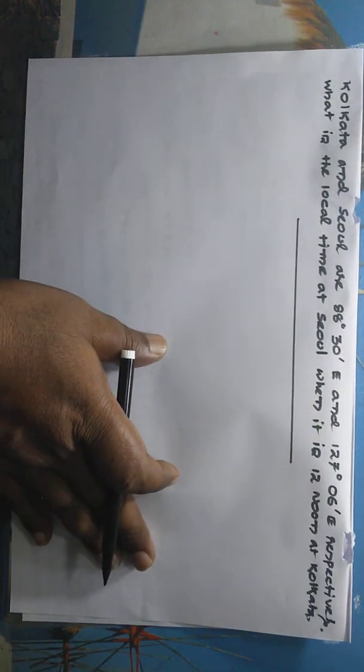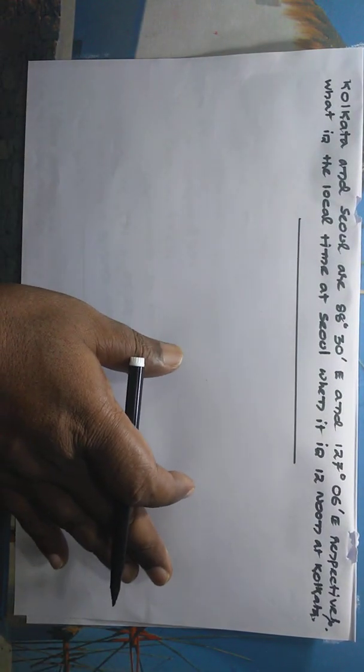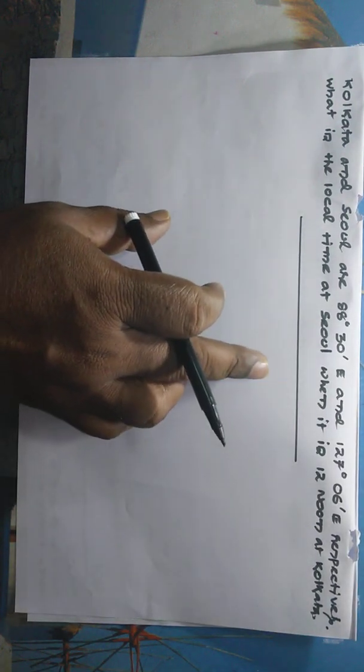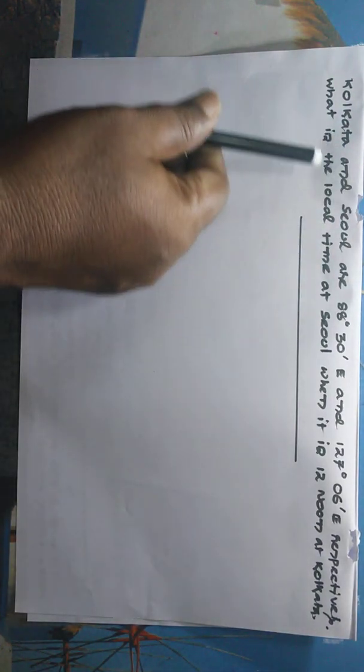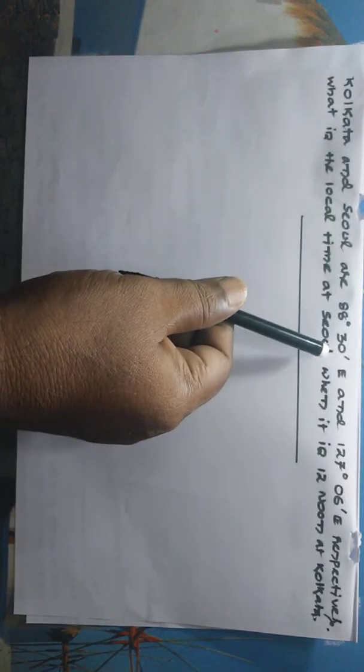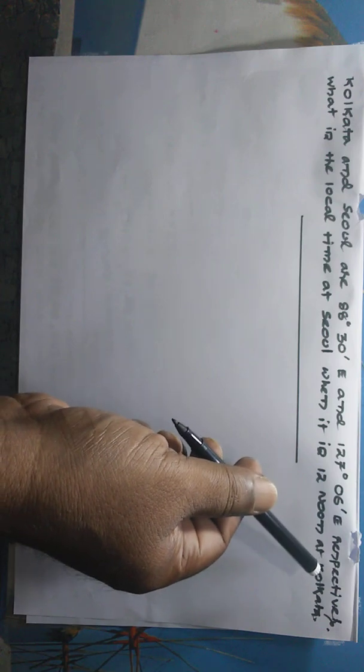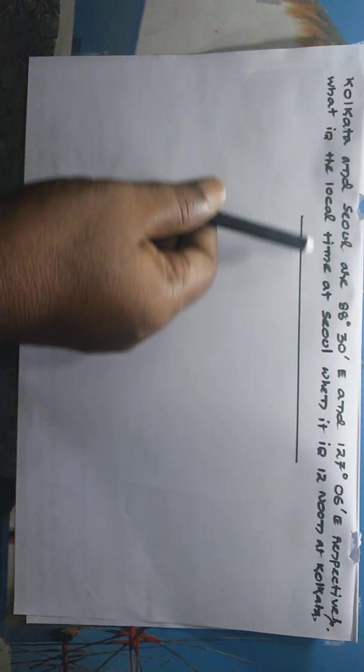Hello students, again I am giving you another example of a sum which has been taken from your book only. Kolkata and Seoul are 88 degree 30 minute east and 127 degree 6 minute east respectively. What is the local time of Seoul when it is 12 noon at Kolkata?